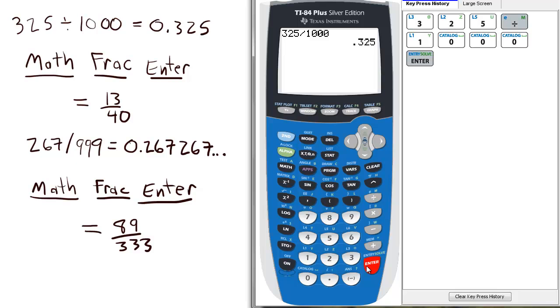To convert this to a fraction of lowest terms, we press MATH, we select FRAC, and press ENTER. So it's 13 over 40. So 0.325 as a fraction of lowest terms is 13 over 40.